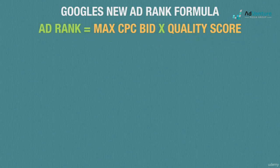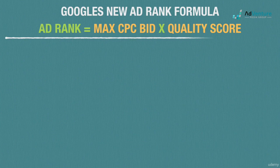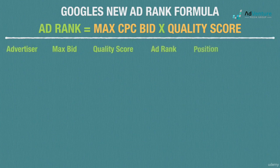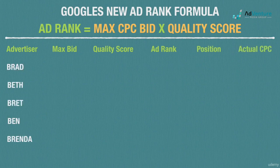Let's create a sample auction with some of our old friends, now adding a couple of women into the auction. In this example, we're going to have Brad, Beth, Brett, Ben, and Brenda all bidding on the same keyword. For the sake of the example, let's assume there are only four available ad slots on this search results page, so only four of these five advertisers will win an ad spot.